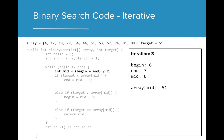In the final iteration, we see we only have two values remaining. The midpoint value is calculated as the same value as our beginning point in this case. On this third iteration, our midpoint that is tested is equal to our target number, and we return that value.